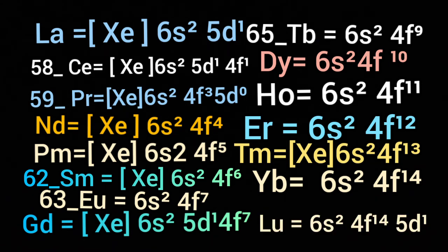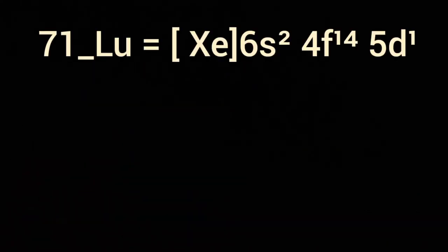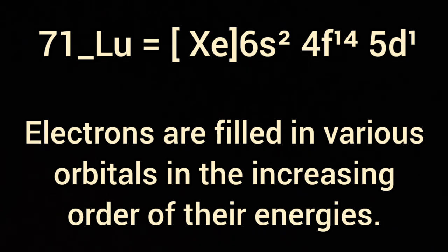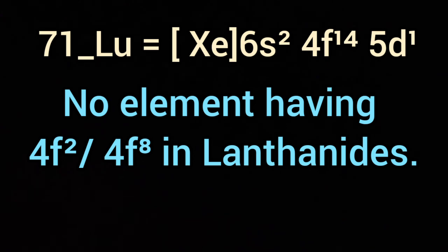And in case of lutetium, the electron configuration becomes [Xe] 6s2 4F14 5D1. According to the above principle, electrons are filled in the increasing order of their energies. You will notice that in the lanthanoids, you won't find any element having a 4F2 or 4F8 configuration.